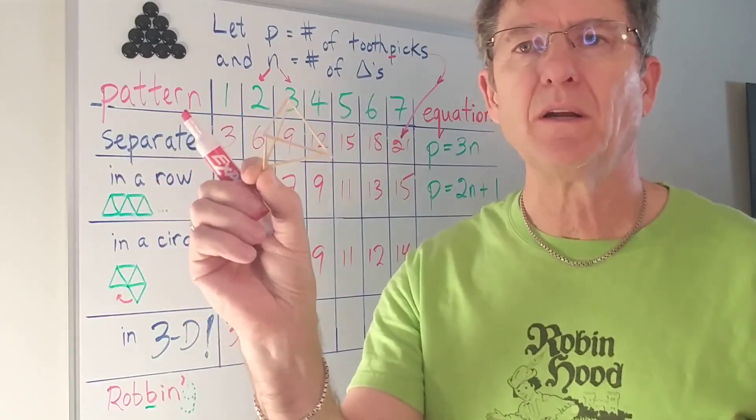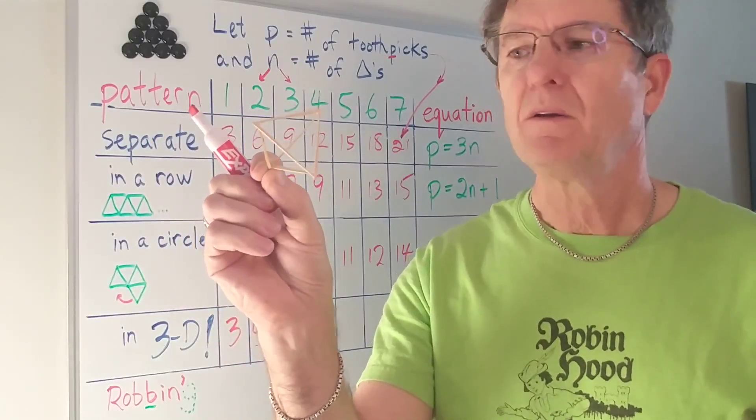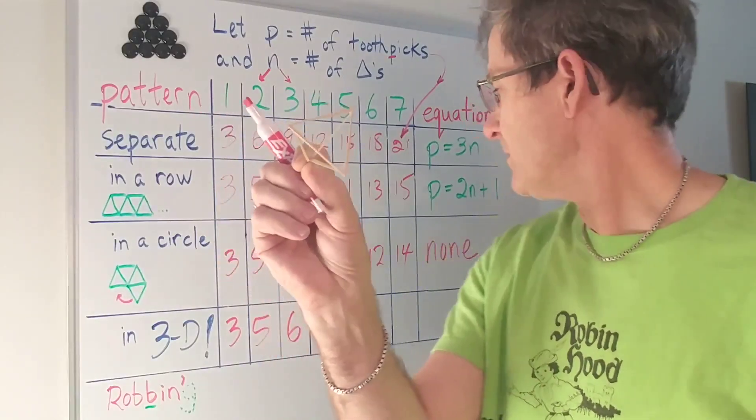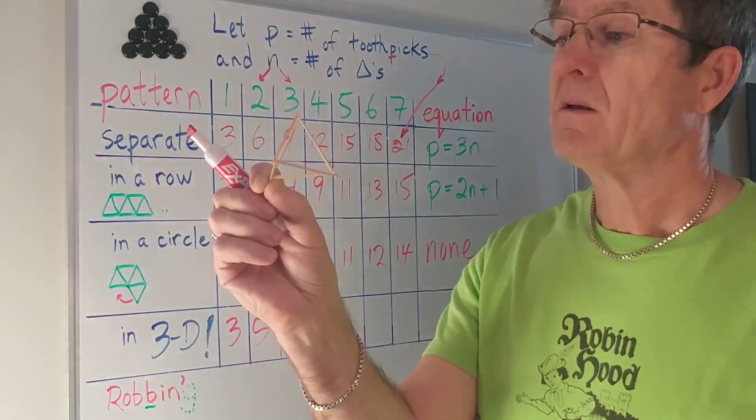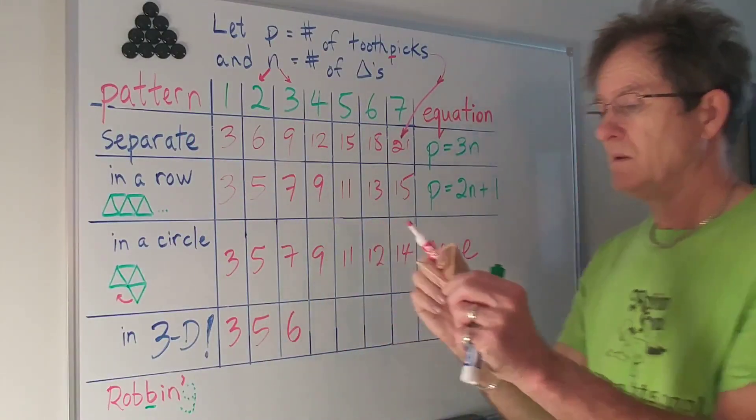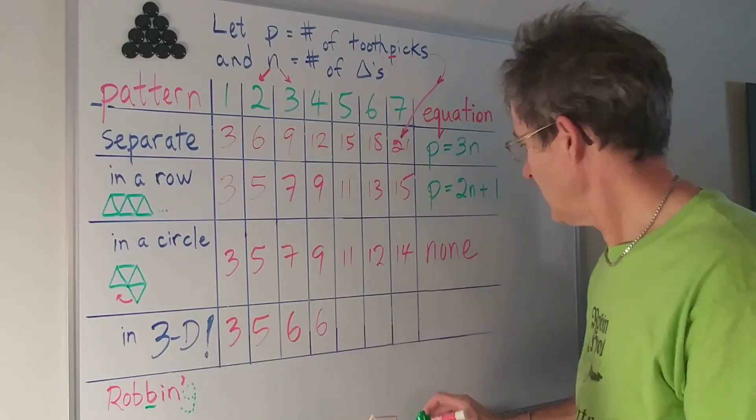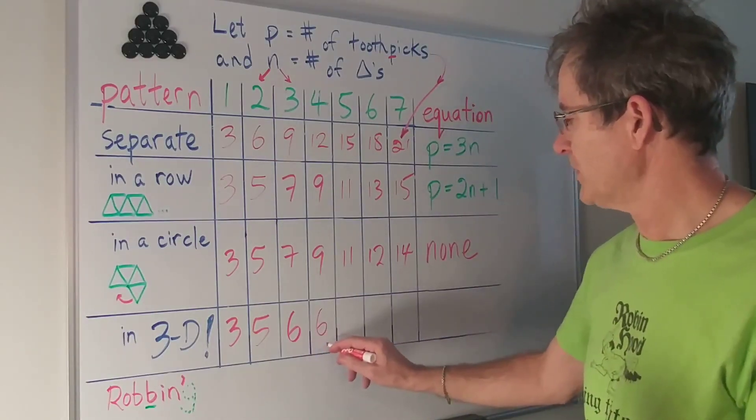It's like this tetrahedron here. Six toothpicks. Four triangles. So that would be here actually. And you make three and four at the same time. So those are both six.